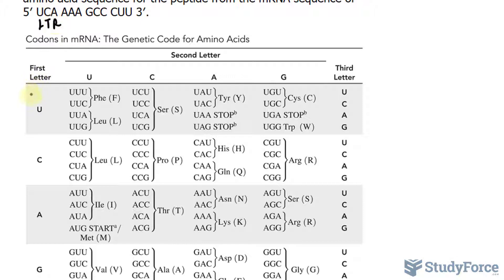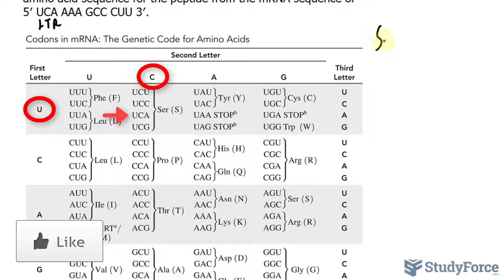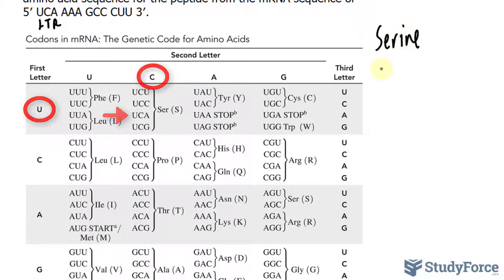The first codon is UCA. U is the first letter on the left, then we locate C along the top, and within that section we find the last letter A. It turns out to be serine. So our first amino acid is serine.